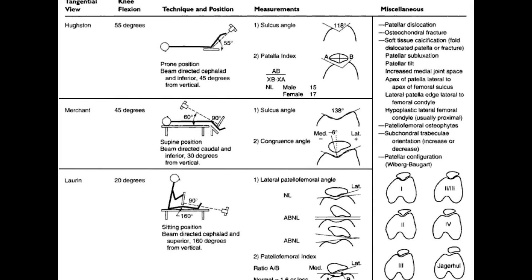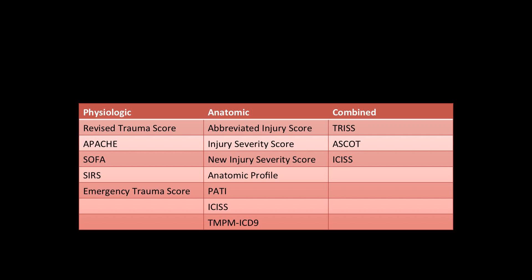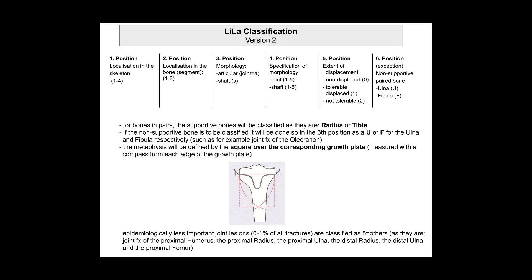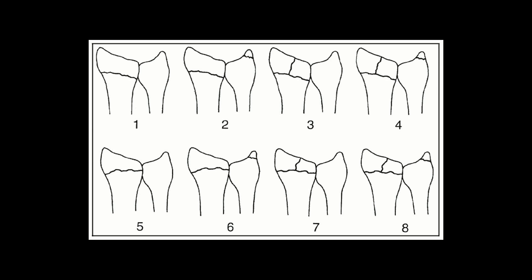This classification system was developed by Harold CHERN and Hans-Jorg S. CHERN in 1982 at the Hanover Medical School, Hanover, Germany, to classify both open and closed fractures.